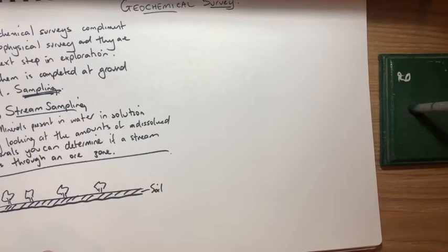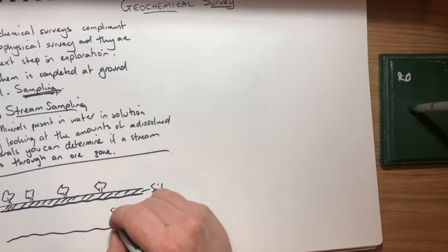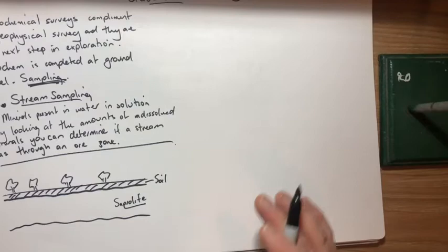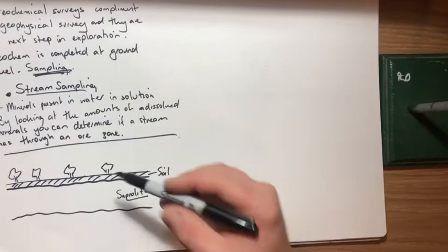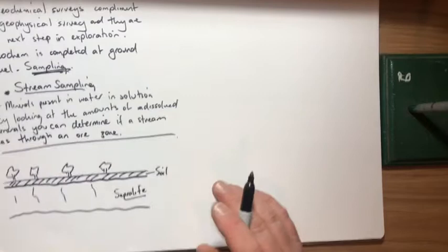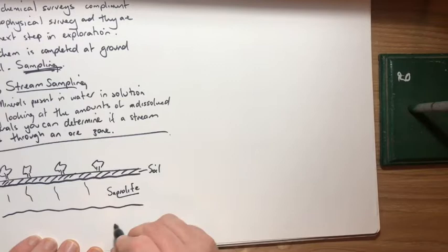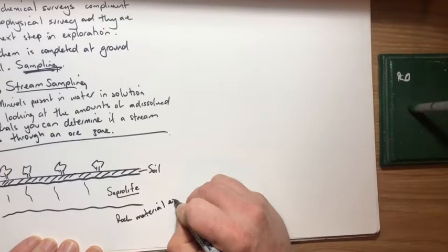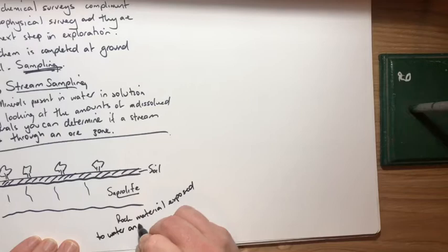Below that, for many meters, we would have what's called a saprolite zone. Now, a saprolite zone is an oxidized layer. It's a layer of rock that's actually been oxidized because it is quite close to the surface and oxygen and water can actually make its way through into this sort of rock and weather it. So let's write down what this is. So saprolite is rock material exposed to water and oxygen. It is weathered material.